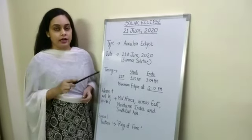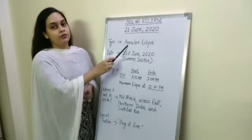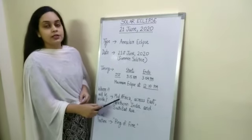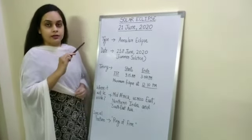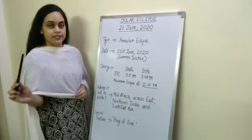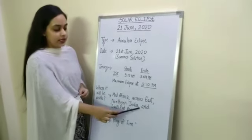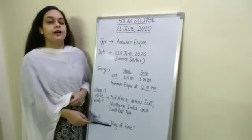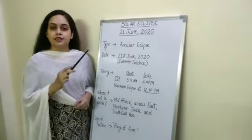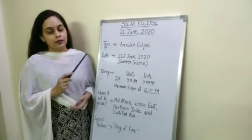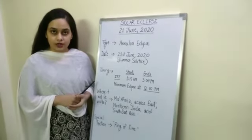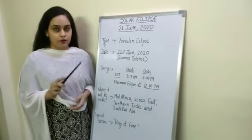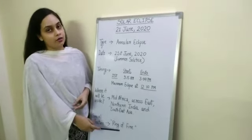You will be able to see a ring of light around the moon because it is a type of annular eclipse. It will be visible in mid-Africa, and then the umbral shadow will move towards the east, across northern India and southeast Asia. The special feature everyone is talking about is the Ring of Fire — the ring of light visible around the edges of the moon. Because the moon will be closer to the earth, it will not be able to completely cover the sun, so a ring of light will appear around the moon, known as the Ring of Fire or annulus.